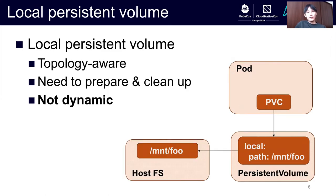A practical method was presented in Kubernetes 1.14, and that is local persistent volume. This feature can help topology-aware pod scheduling with persistent volumes, once persistent volumes are created manually. In other words, users must prepare persistent volumes beforehand. Of course, we can utilize some automation tools, however that is outside of the persistent volume lifecycle managed by Kubernetes. Therefore, it cannot do dynamic provisioning.